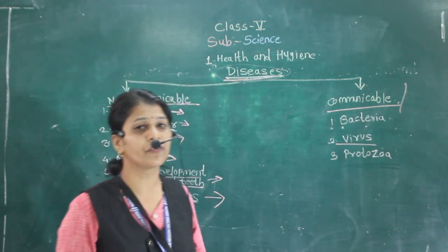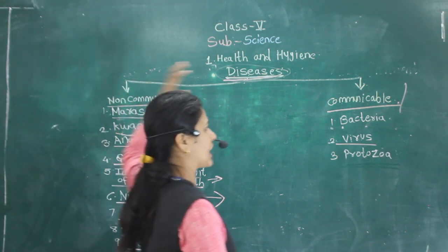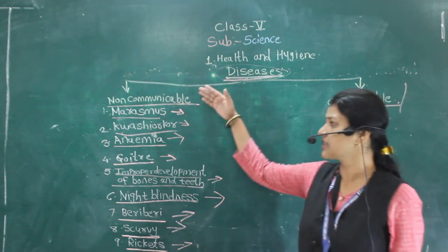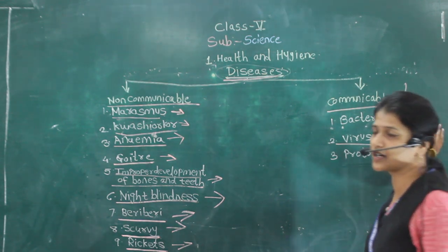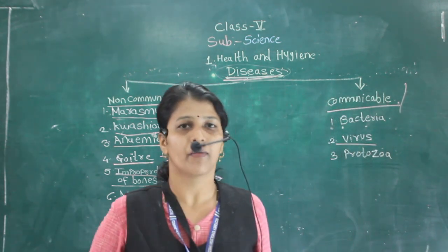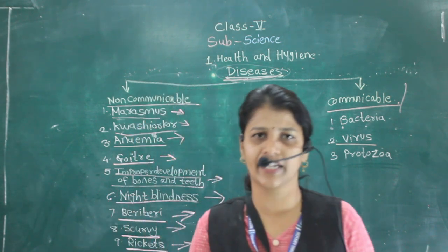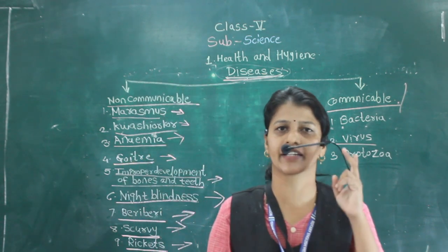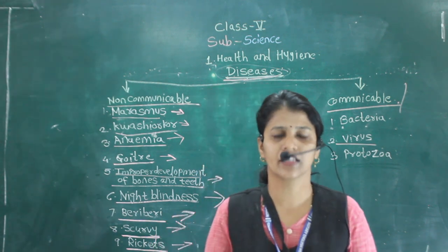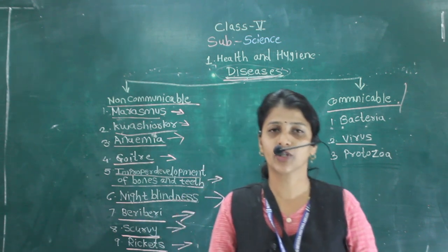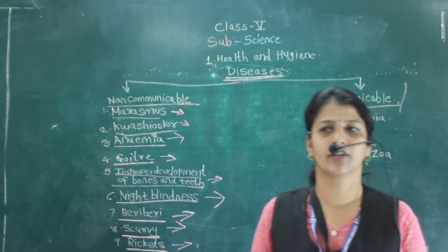These are the two main types of diseases: non-communicable diseases, which are not spread from person to person, and communicable diseases, which are spread from person to person. Today we completed balanced diet, how to preserve food, and the two types of diseases. Please read the lesson, read the questions, note new words in your notebook, and read the lesson twice. Thank you.